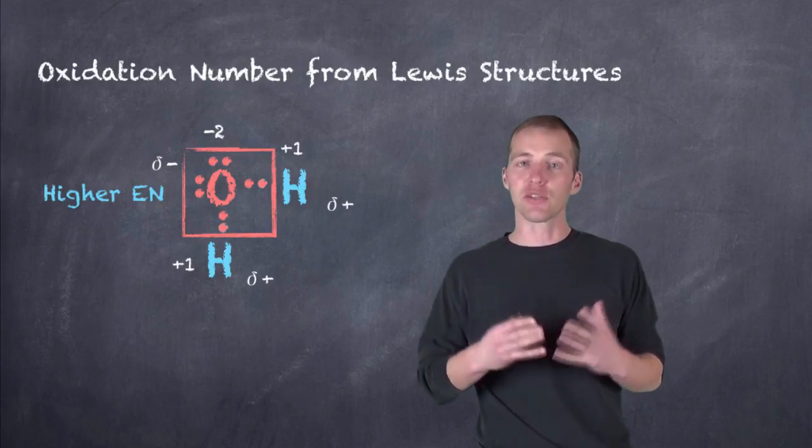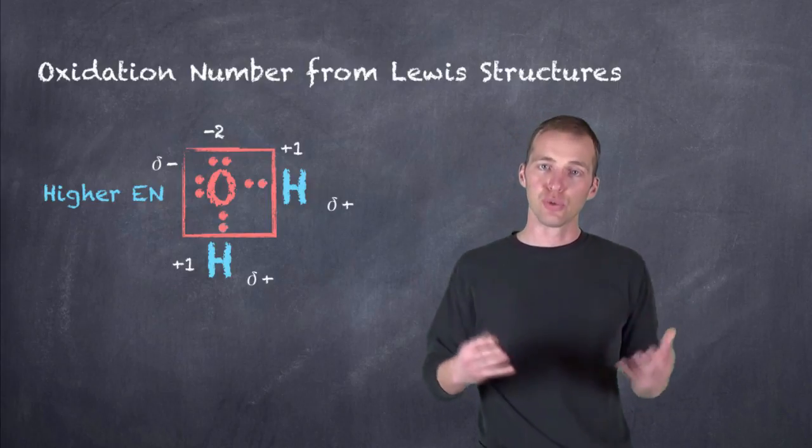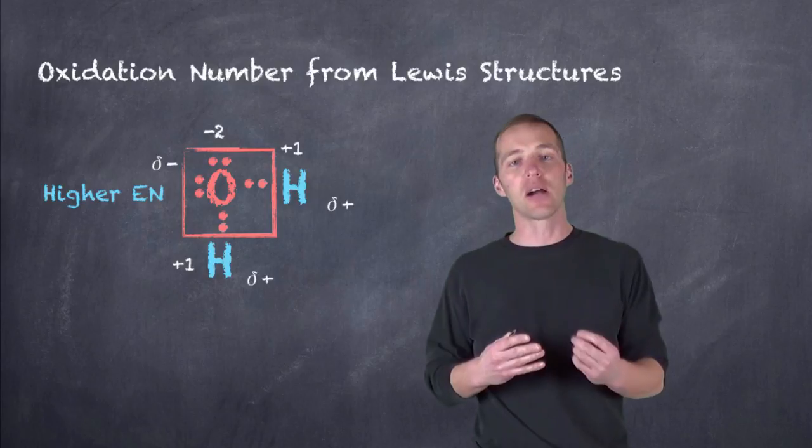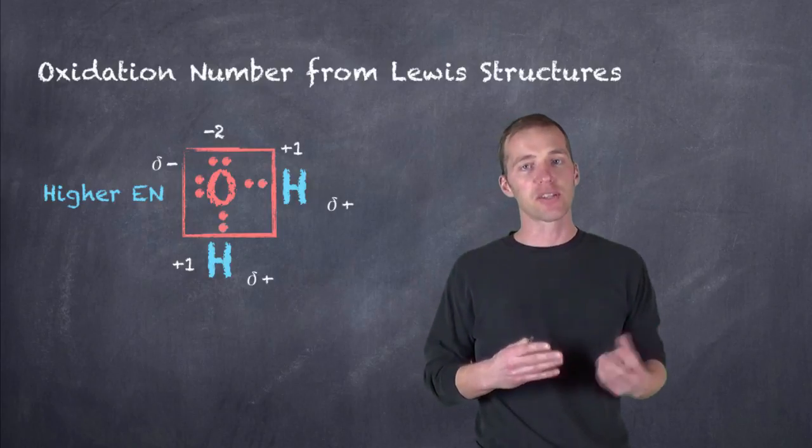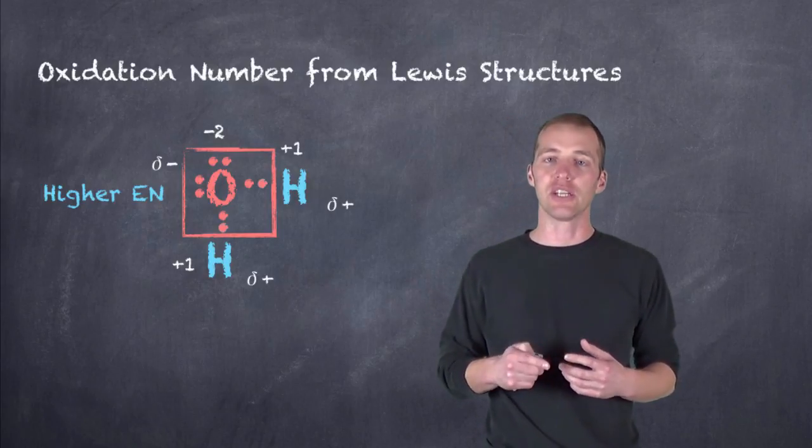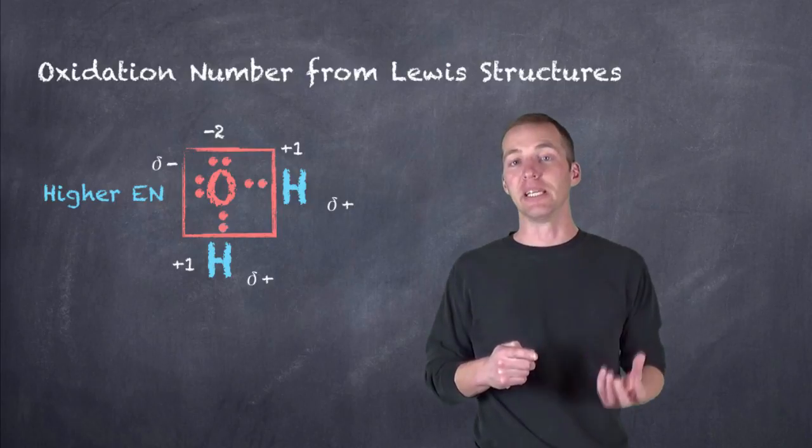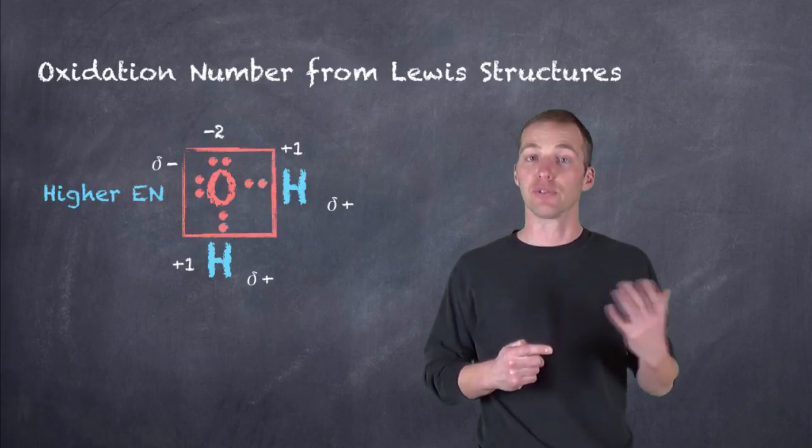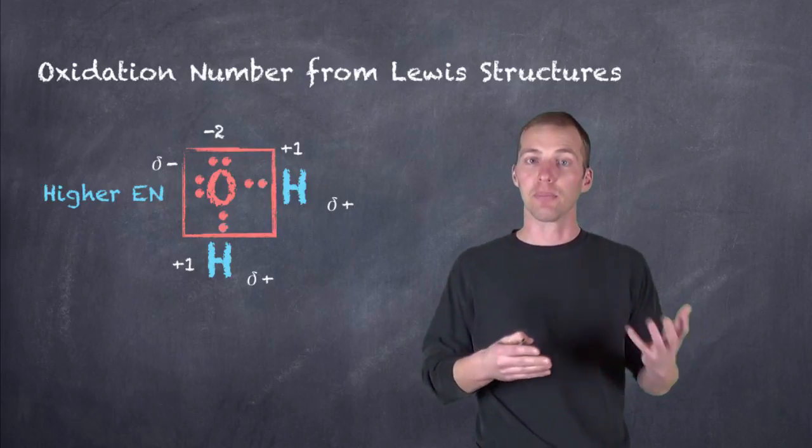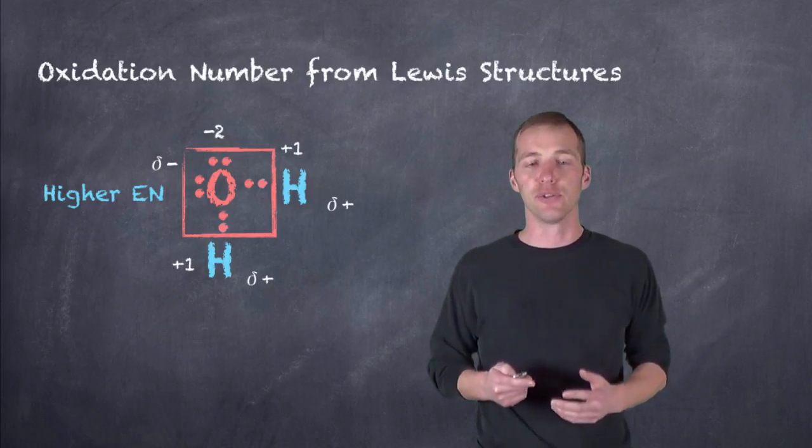And if we take a look because it's a neutral compound, a neutral molecule, we know that the oxidation numbers, the positive oxidation numbers and the negative oxidation numbers, have to add up to being neutral. That is, they have to add up to zero. So minus two plus one and plus one equals zero because it's a neutral molecule.